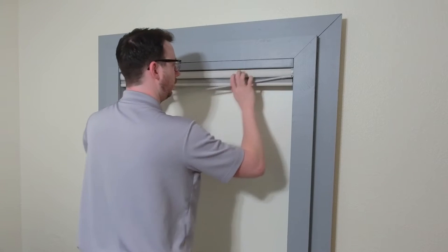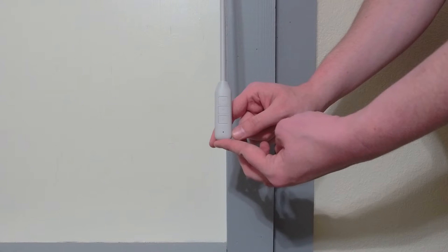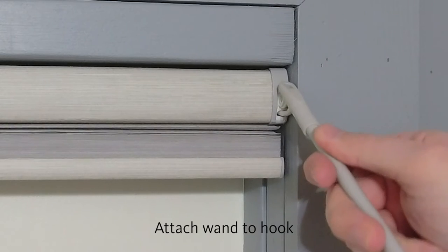After installing the shade, you'll need to attach the wand. With the wand buttons facing you, attach the end of the wand to the hook on the headrail.